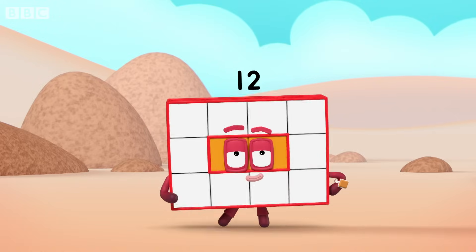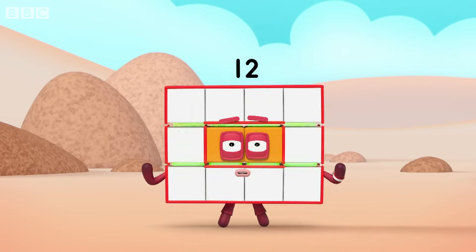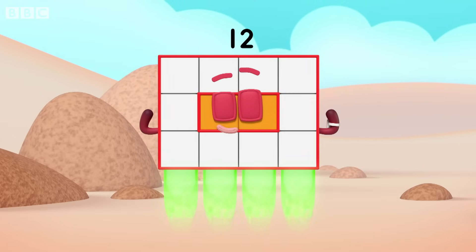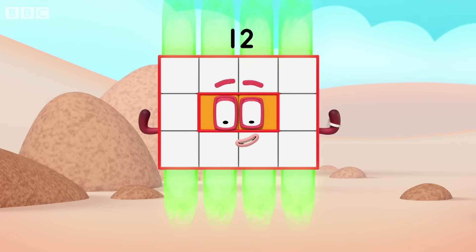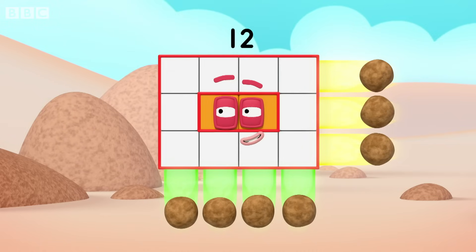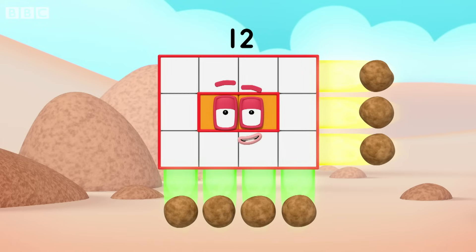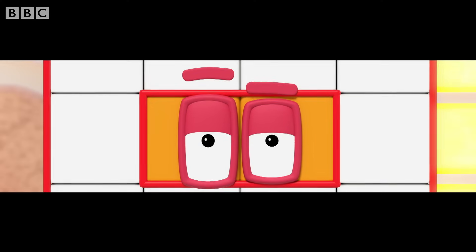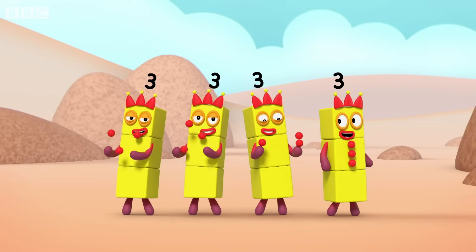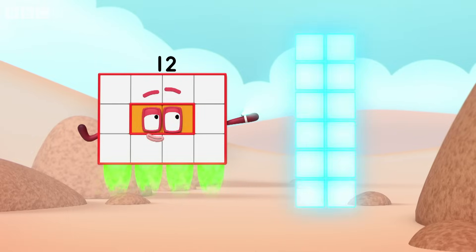I'm rectangular twelve, I'm ten and two. I make arrays — that's what I do. When I put my blocks in columns and rows, I make an array and my rectangle goes like this. Four by three. Four by three's my next array — four lots of three, you could put it that way. And this rectangular display is about to show you how it's made. Break away! Four three! Look at me! Switch!